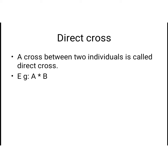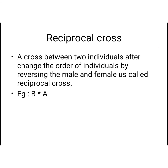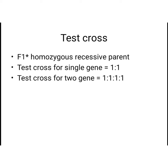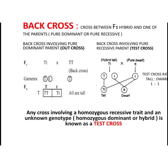Direct cross is a normal cross between two individuals. Reciprocal cross is a cross between two individuals after reversing the order of male and female. Back cross is when F1 progeny is mated back to one of its parents — very important. Test cross is when F1 is crossed with a homozygous recessive parent. Don't confuse back cross with test cross. Test cross ratio for a single gene is 1:1, and for two genes is 1:1:1:1. Out cross is F1 crossed with dominant parent; test cross is F1 crossed with recessive parent.